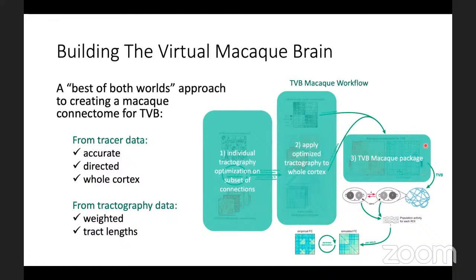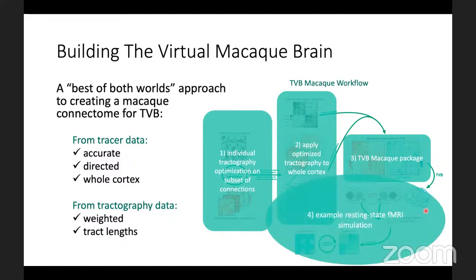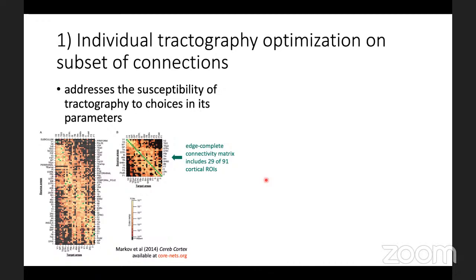I'll show you what the contents of the virtual brain macaque package actually are, and then walk through an example of a resting state fMRI simulation. Given that tractography is really susceptible to our choices and parameters, can we use available information from tracer studies to choose the tractography parameters for each animal? There is a very nice dataset available on core-nets.org — a weighted tracer connectome with a 91-region parcellation of the brain.